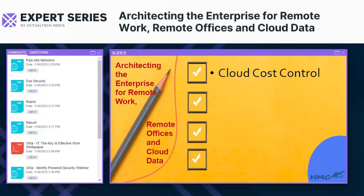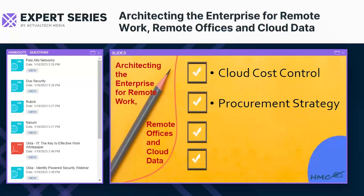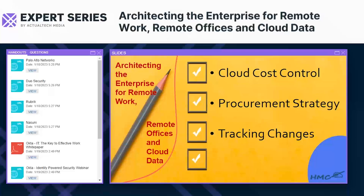Prices are constantly changing, with special deals and promotions always emerging — competition among hyperscalers and smaller cloud providers drives continuous improvement. But you need constant cloud cost control to track those changes and take advantage of as many as possible. Develop a superior procurement strategy for how you'll buy and ensure you always have the best price — keep a close eye on every cloud service you use. You'll also need to do extensive resource mapping: what goes where across your cloud environment.